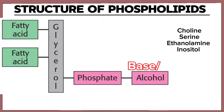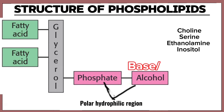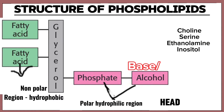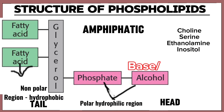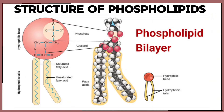The nitrogenous base and the phosphate group are combined together to form a polar hydrophilic region, which means water-loving. This polar hydrophilic region is what we call the head. The two fatty acids form the non-polar hydrophobic region, known as the tail. This makes the structure of phospholipids an amphipathic molecule.